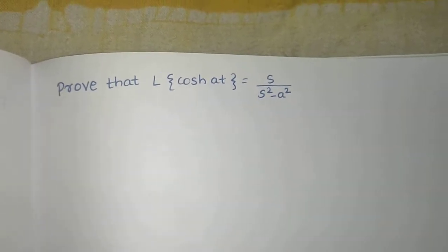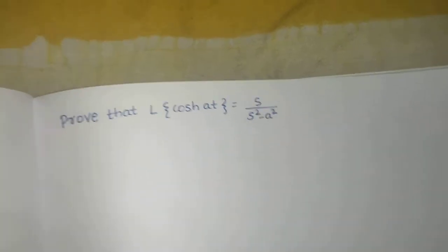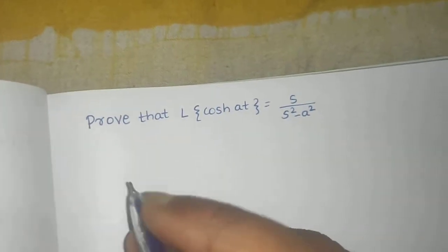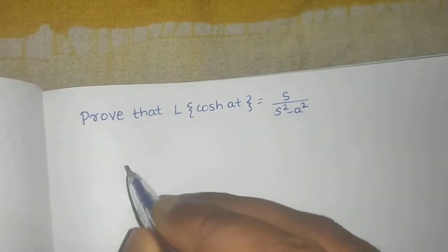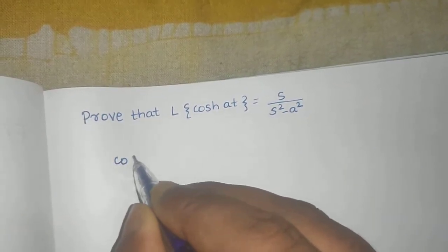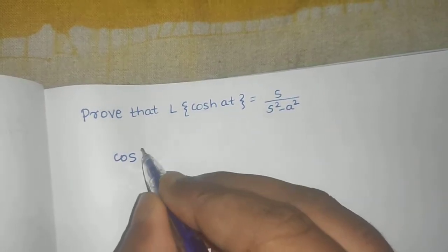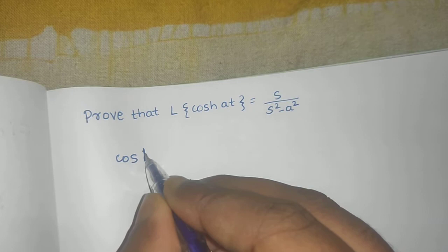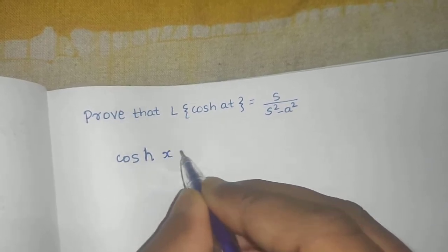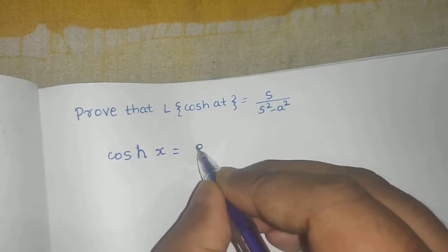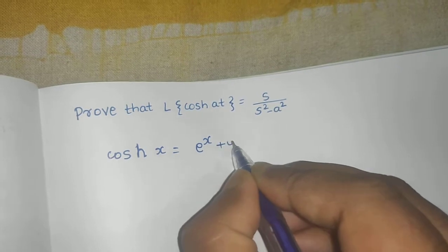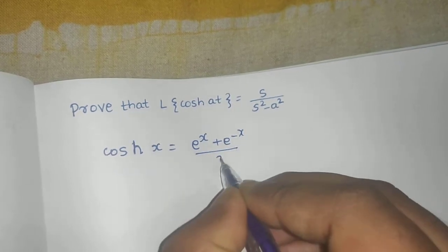Now we need to prove that Laplace of cosh at is s divided by s squared minus a squared. First of all, what is cosh at written in terms of exponent? We can write cosh of x as e to the power x plus e to the power minus x divided by 2.